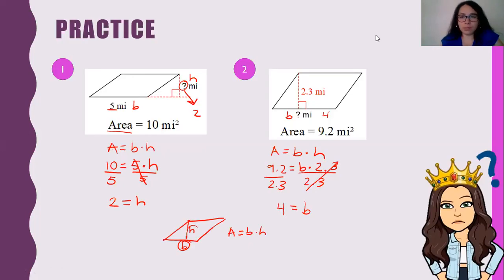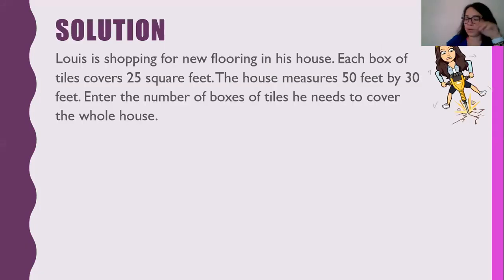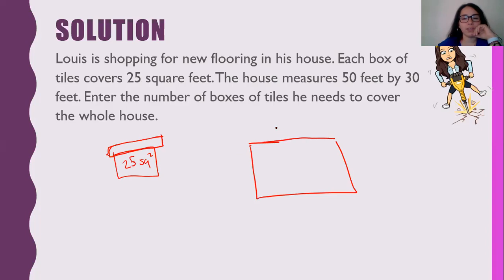Oh, the word problem. Look at it. So it says, Louis is shopping for new flooring in his house. So he's trying to put floors in his house. Each box of tiles covers 25 square feet. So we know that each box of tiles, there's tiles in there. And in that box of tiles, there's 25 square feet. And then the house measures 50 feet by 30. So we're going to go 50 feet by 30. So we need to find how many boxes we need to cover the whole thing, right? So we want to cover this whole thing. If I'm asking you to cover this whole thing, we're going to find area.